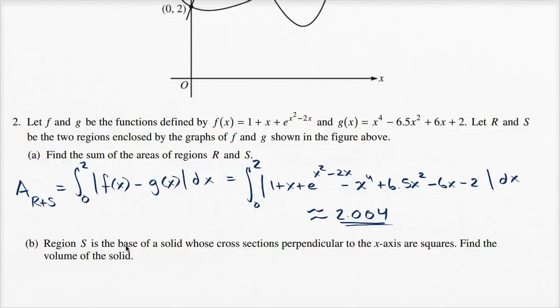Part 2b: Region S is the base of a solid whose cross sections perpendicular to the x-axis are squares. Find the volume of the solid.